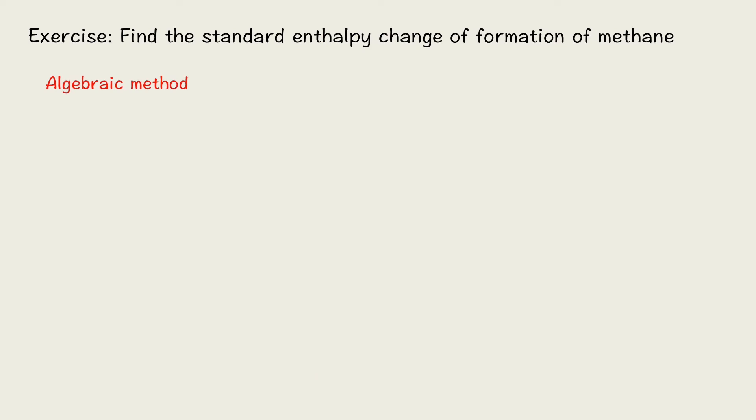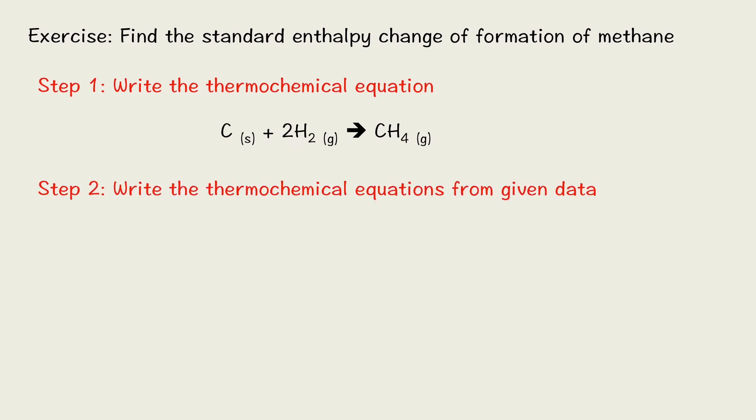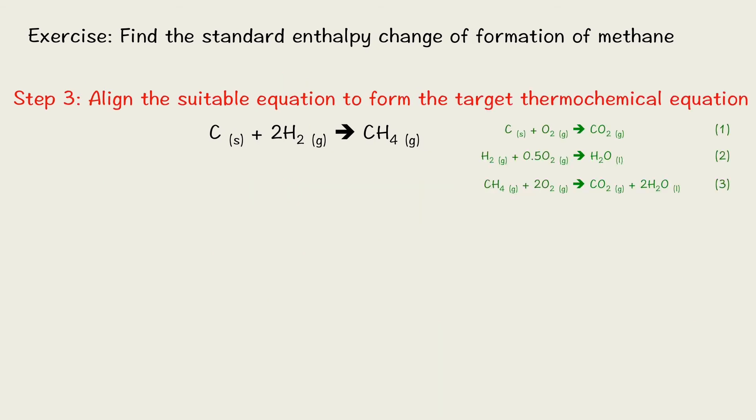Here is an example in your notes. You want to find the enthalpy change of formation of methane. Now this is impossible for direct measurement because methane cannot formed under room condition. We cannot mix carbon and hydrogen and expect the methane to form. So here introduce an algebra method. Step one, we want to write down the thermochemical equation first. Now here shows. The second one is we should write down the thermochemical equations from given data. Now we have given three sets data and here shows their thermochemical equations. Now we set this aside.